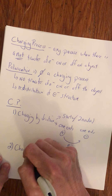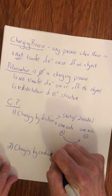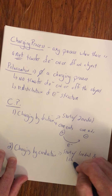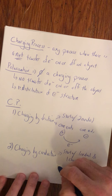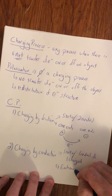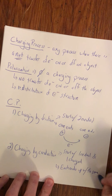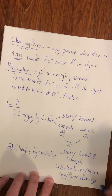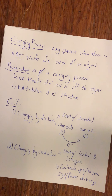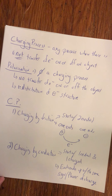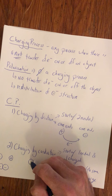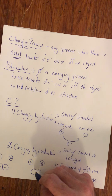The second one is charging by conduction. We start with one neutral and one charged object, whether that's positive or negative. What we end up with is that each ends up with the same sign of charge. If I have a negative object and a neutral object and put them together, they both end up negative. If I have a positive object and a neutral object and put them together, they both end up positive.